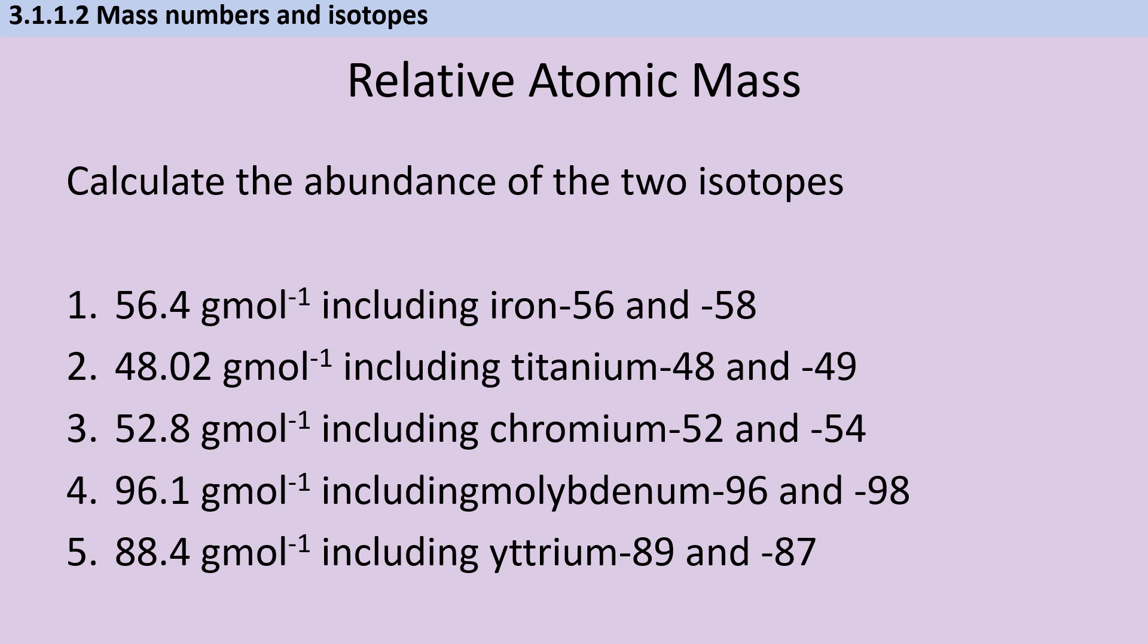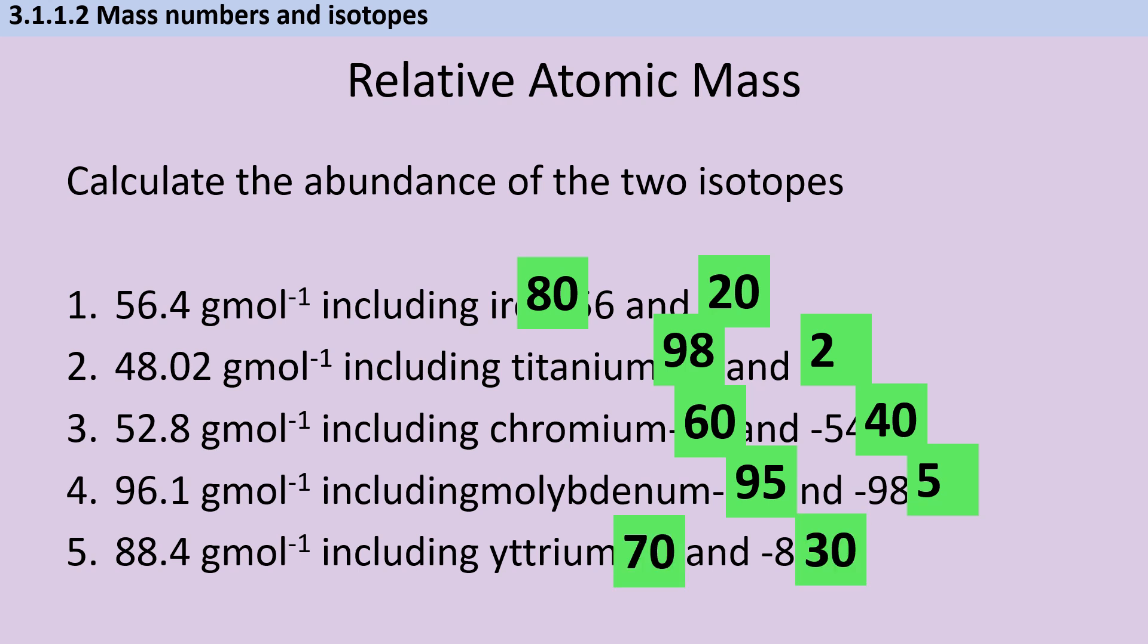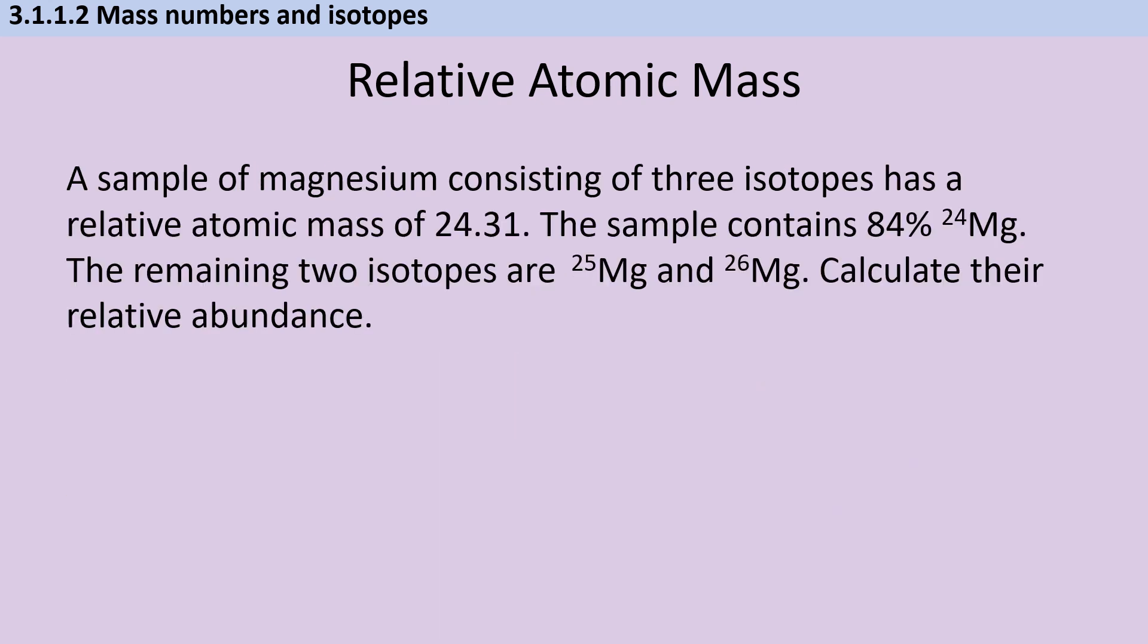So pause the video, give it a go, and then we can check if you've got them right. So hopefully you've worked out that iron-56 and iron-58 make up 80% and 20% of the sample. Titanium-48 and 49 make up 98% and 2% respectively. Chromium-52 and 54 are 60% and 40%. The molybdenum isotopes are 95 and 5% and yttrium are 70 and 30%.